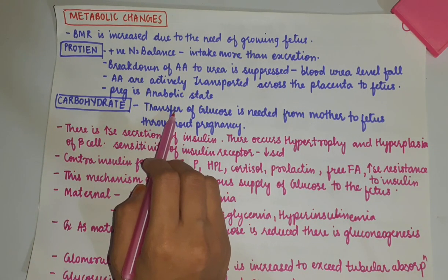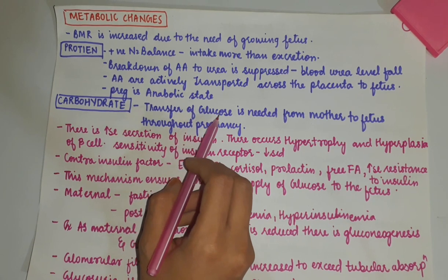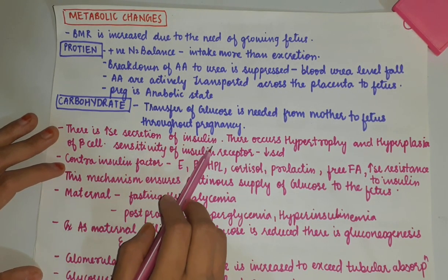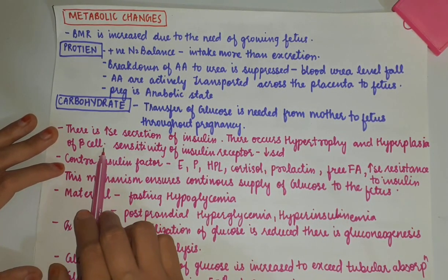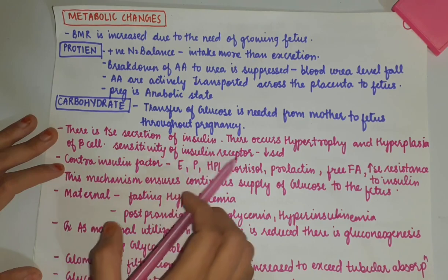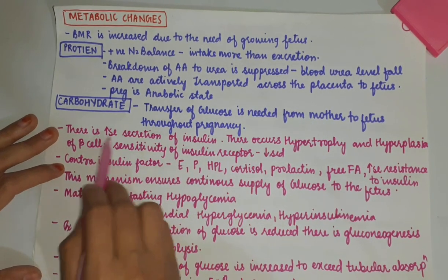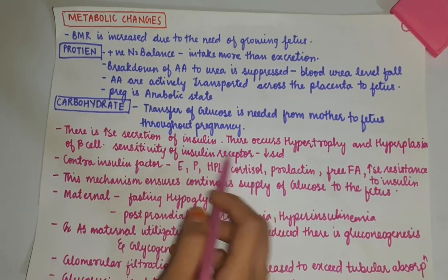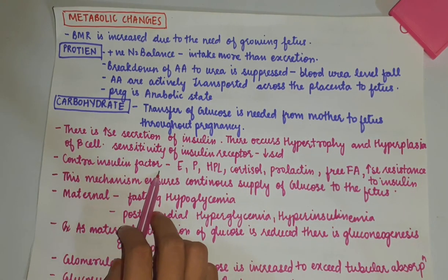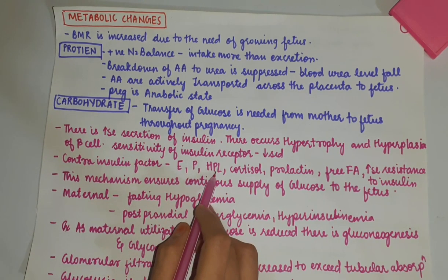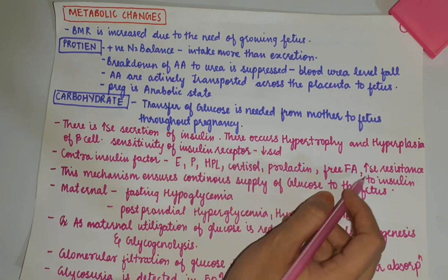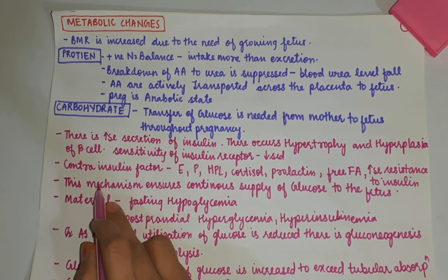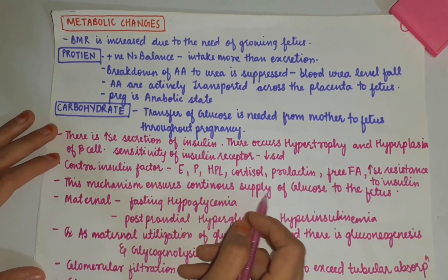Carbohydrate: during pregnancy, there is a need for continuous supply of glucose from the mother to the fetus. As a result, there is increased secretion of insulin, and hypertrophy and hyperplasia of beta cells occur. Sensitivity of insulin receptors decreases. This increased insulin secretion and beta cell changes occur in response to decreased insulin sensitivity and contra-insulin factors — estrogen, progesterone, human placental lactogen, cortisol, prolactin, and free fatty acids — which increase resistance to insulin. This mechanism ensures a continuous supply of glucose to the fetus.